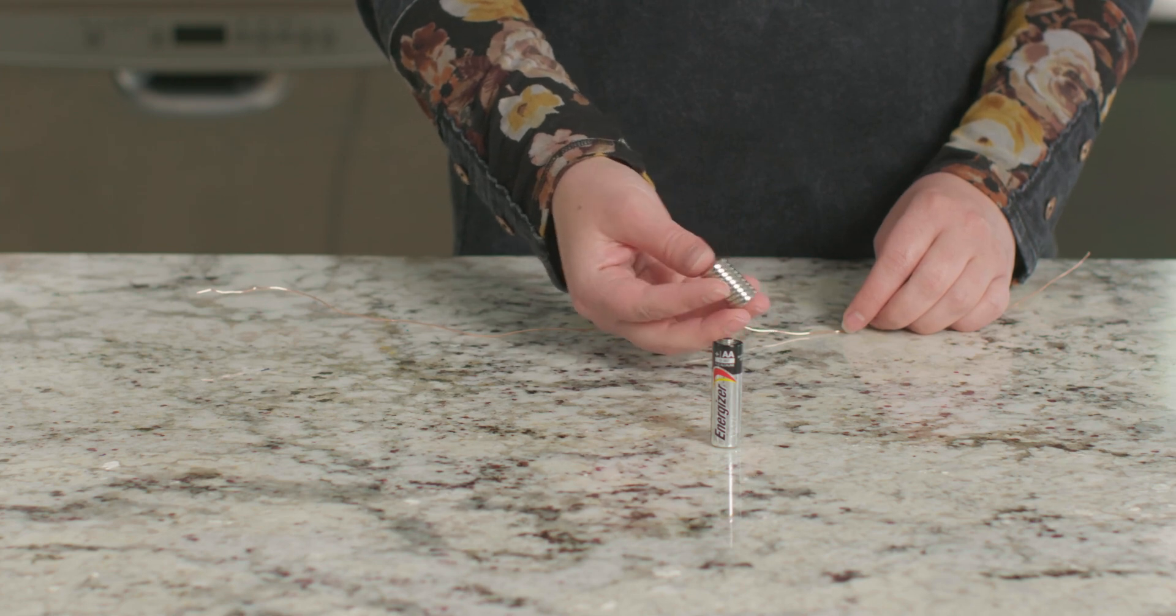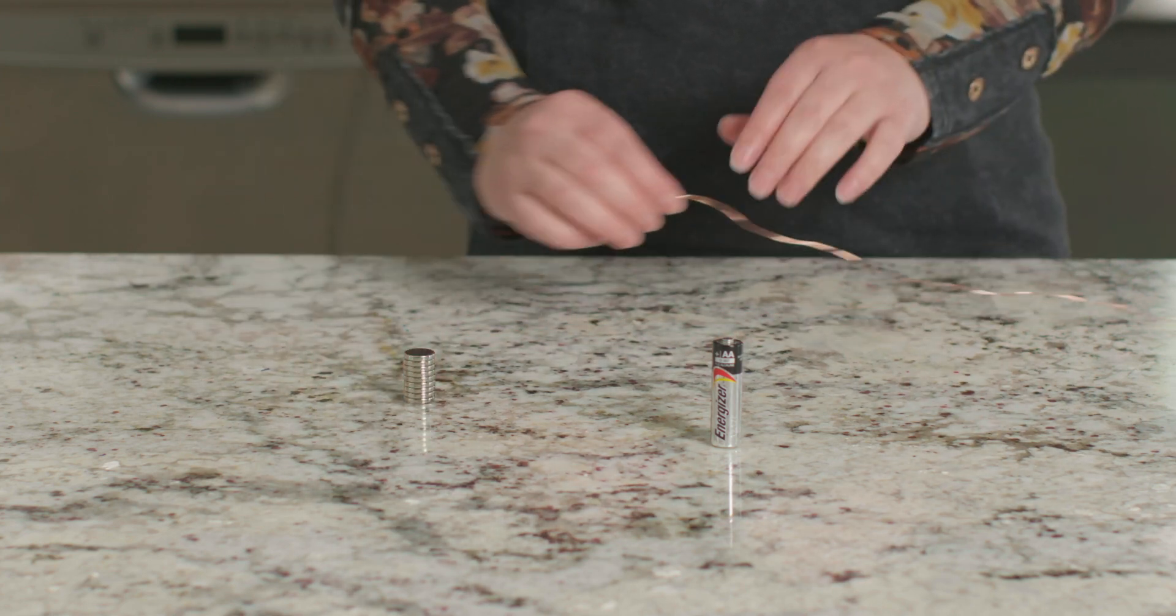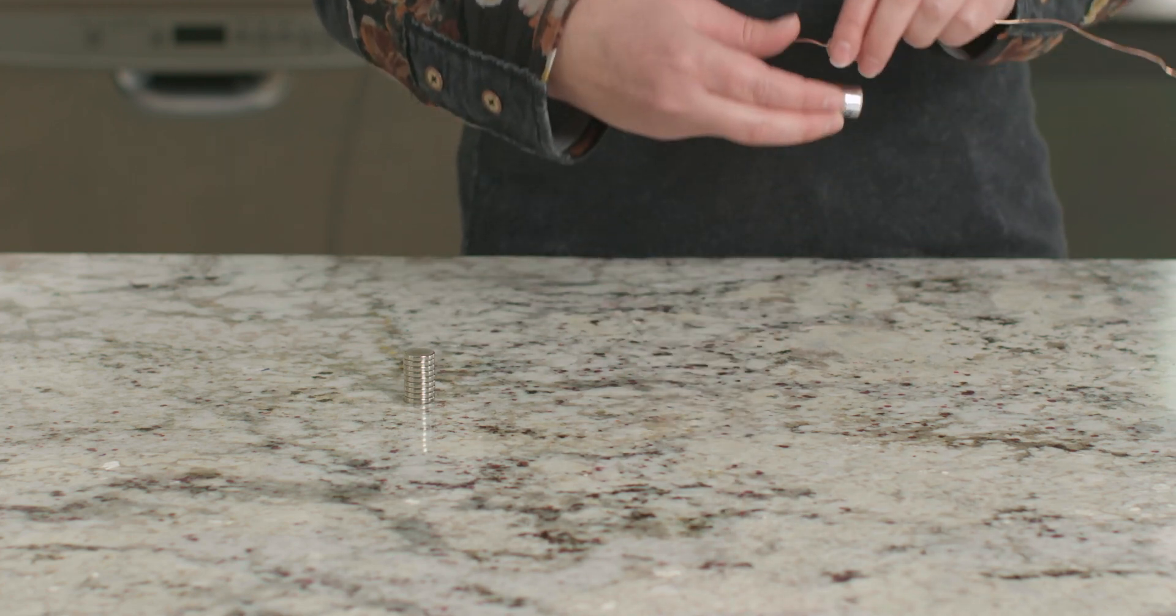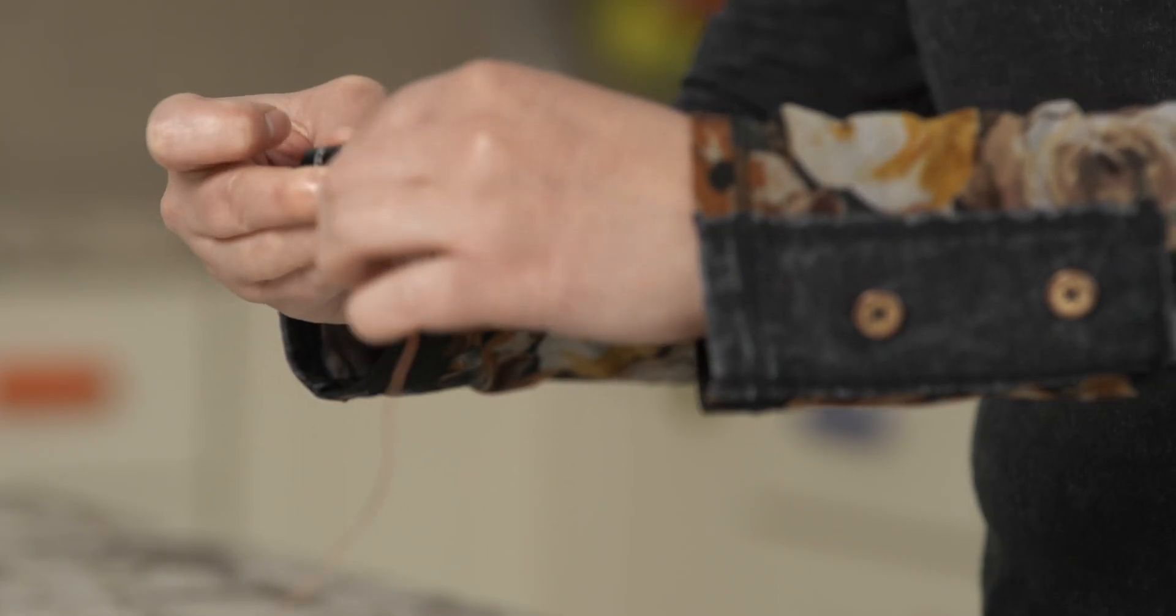Today, we will create an electromagnetic spinner. Let's start by wrapping this copper wire loosely around our battery several times.